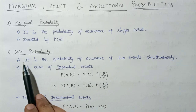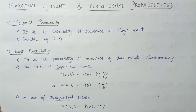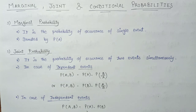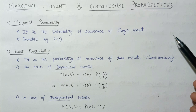Similarly, if we talk about independent events in the case of joint probability, the joint probability of event A and B is equal to the product of the probability of event A and the probability of event B. That is all about marginal as well as joint probability.